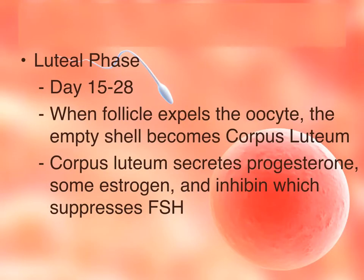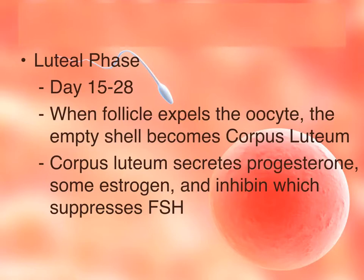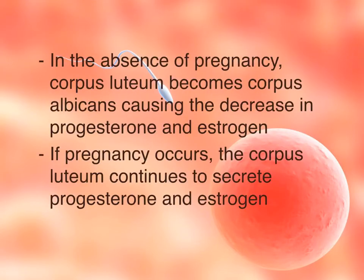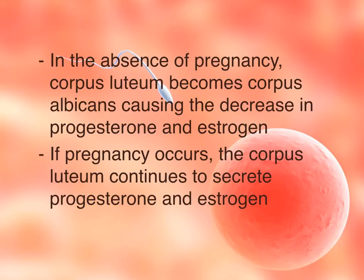From day 15 through day 28 is called the luteal phase, because once the mature oocyte has been released, the shell left over is called the corpus luteum. During this phase, the corpus luteum secretes progesterone and estrogen, and there is a rising level of inhibin which suppresses follicle-stimulating hormone, meaning the follicle will not develop at this stage. If no pregnancy occurs, the corpus luteum degenerates into the corpus albicans, and the levels of progesterone and estrogen decrease. If pregnancy does occur, the corpus luteum continues to release progesterone and estrogen to help along the development of the fetus.